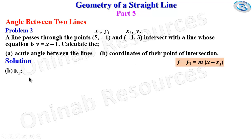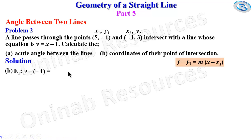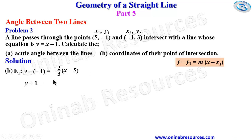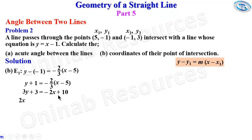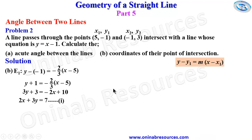Using point (5, negative 1) and gradient negative 2 over 3: y minus negative 1 equals negative 2 over 3 times (x minus 5), which gives y plus 1 equals negative 2 over 3 times (x minus 5). Cross-multiplying and expanding: 3y plus 3 equals negative 2x plus 10. Collecting like terms gives 2x plus 3y equals 7. This is equation 1. The line y equals x minus 1 is equation 2.